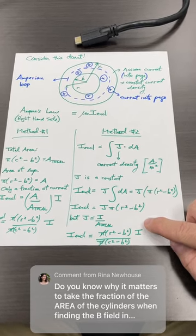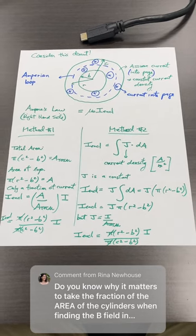At the end, the current density you can always write as a total current divided by the total area of the entire donut, so then you get to the same answer regardless of the method that you use. Hopefully this helps.